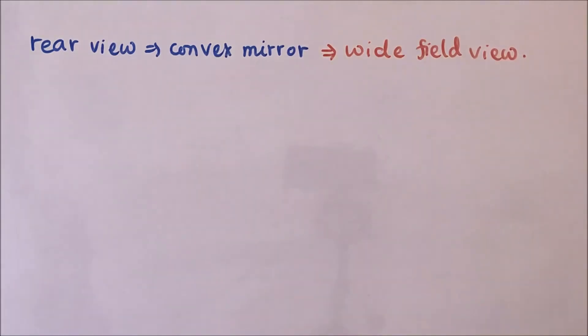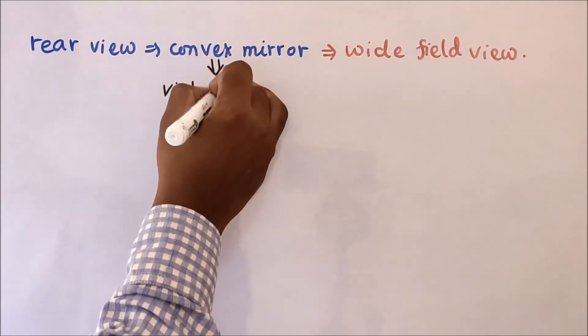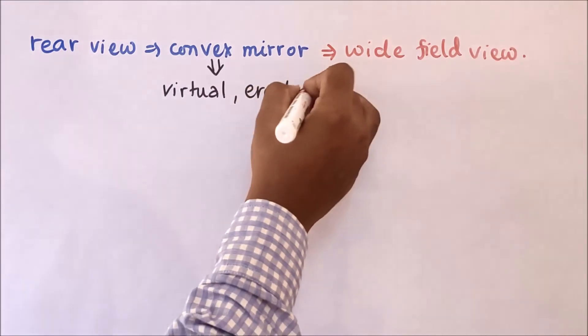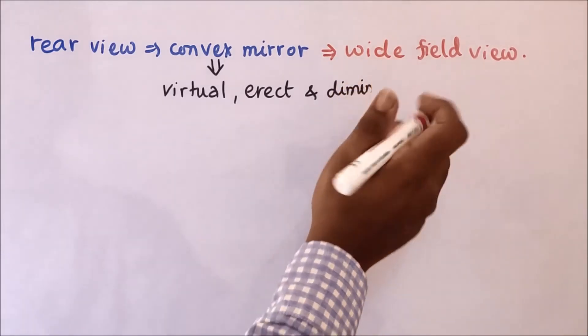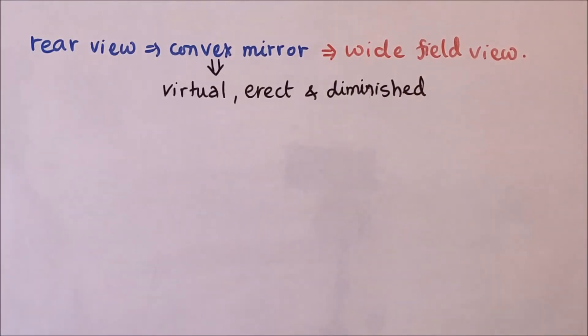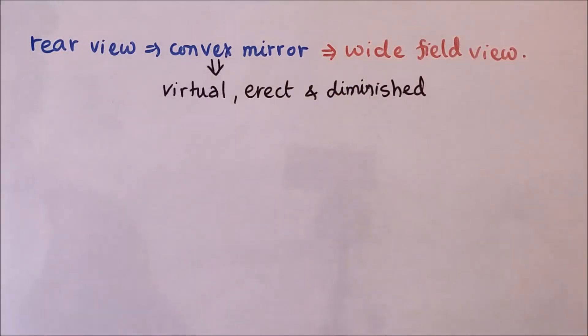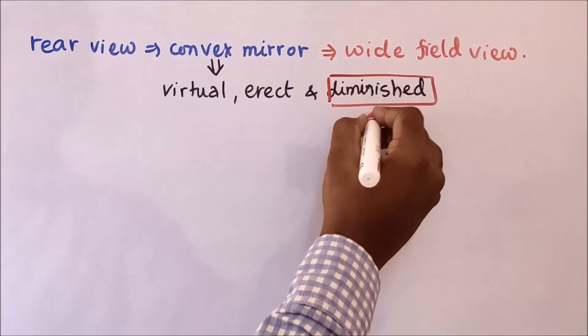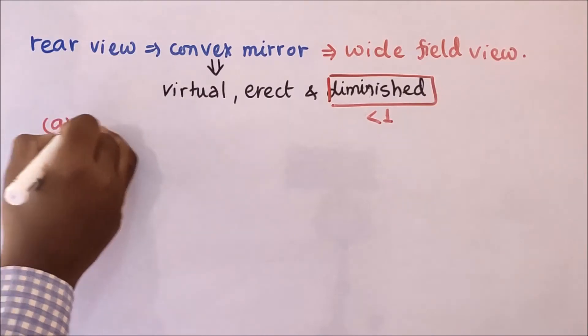It means we can see a large area in the small mirror. And always, the image formed by convex mirror is virtual and diminished. So if the image formed by convex mirror is always diminished, that means the magnification is going to be less than one. So the correct option here is A, less than one.